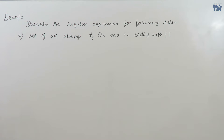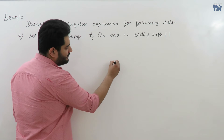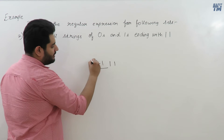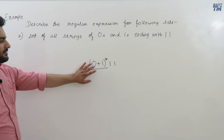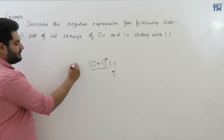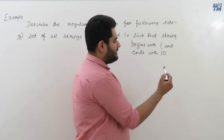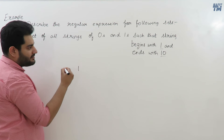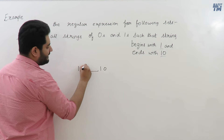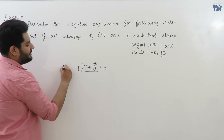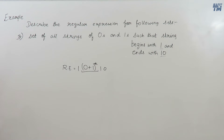Similarly, the set of all strings of 0s and 1s ending with 11: we fix 11 at the end and write (0+1)* for the starting part. The required regular expression is (0+1)*11. For the set of strings beginning with 1 and ending with 10: we fix 1 at the start and 10 at the end, with (0+1)* in between. The required regular expression is 1(0+1)*10.